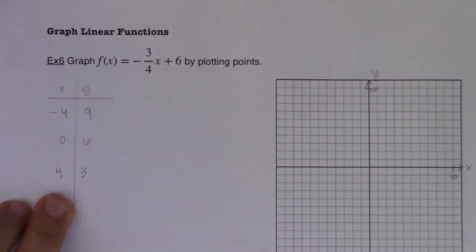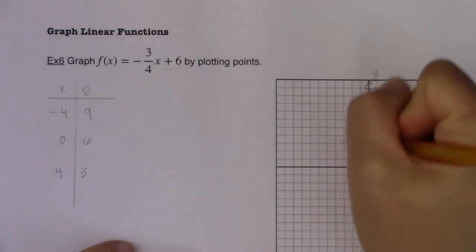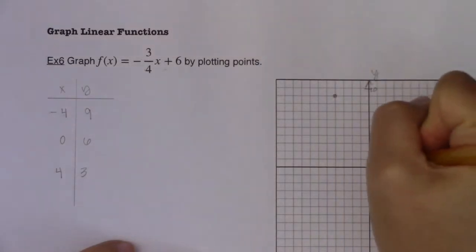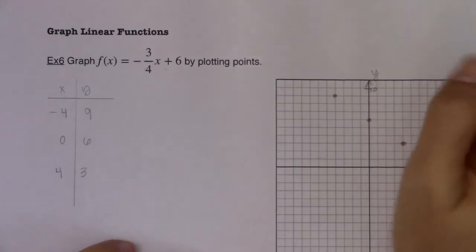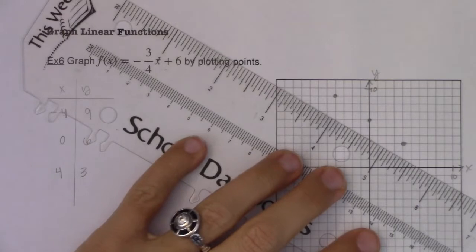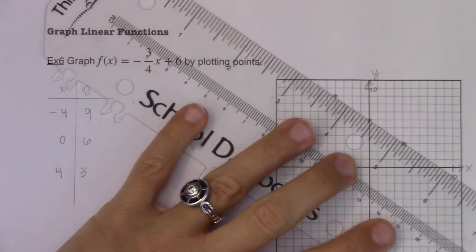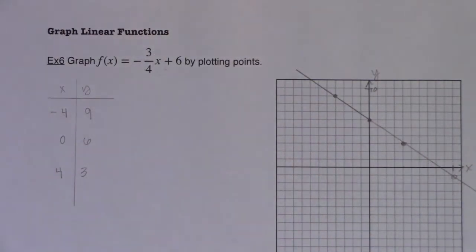With that, I can go graph these ordered pairs. Let's go to negative four, nine. And then I'm going to have zero, six. And then I'm going to have four, three. And then I can see my line forming, so I'm going to go ahead and connect the dots here. And there's the graph of my line. Domain and range, both all real numbers.